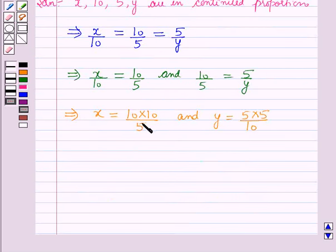Now here 5 into 2 is equal to 10. So this implies x is equal to 2 into 10 that is 20 and y is equal to 5 by 2.